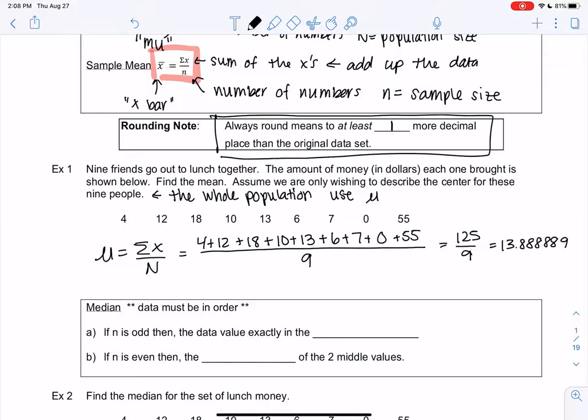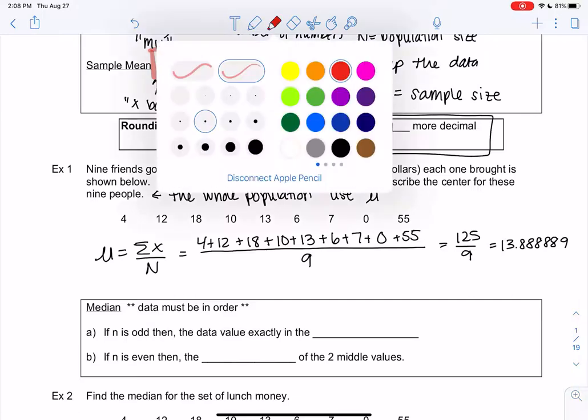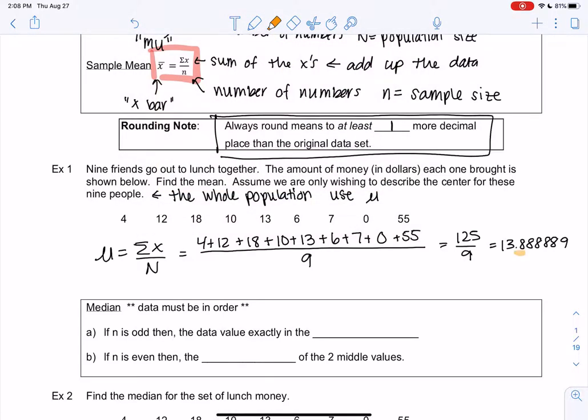So my rounding rule is that we need at least one more decimal place. We need to go at least to the tenths because the original data stops at the ones. So we're going to go one farther. You can always add more. This is a minimum. So 13.9. You could also say 13.89. You can have more, you just can't have less. So that would be my average or my mean.